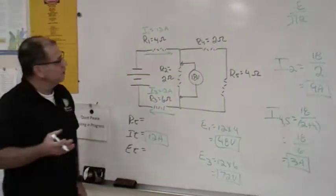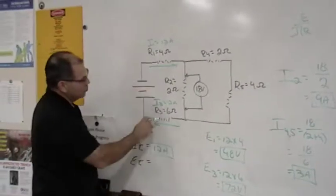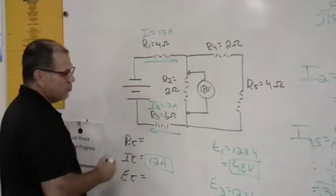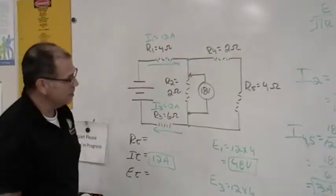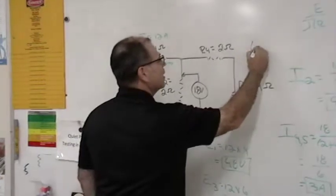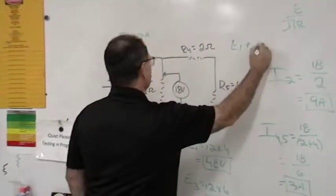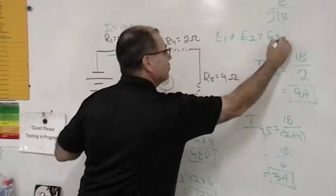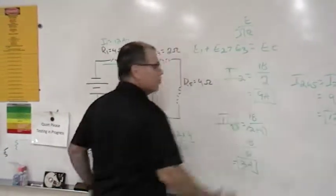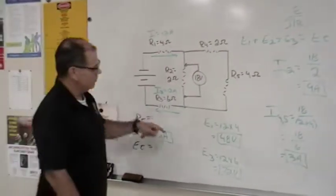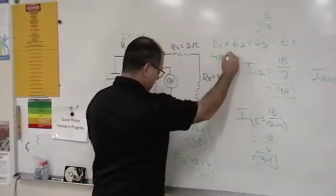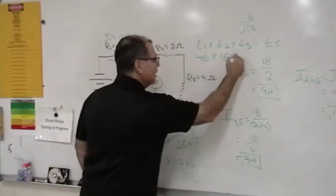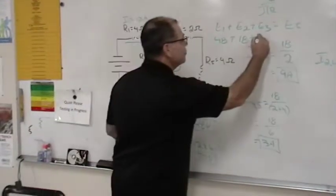Alright, well, since we know the relationship between these two resistors and the rest of the circuit, it's a series circuit, my total voltage is just the sum of the voltage drops. So if I say E1 plus E2 plus E3, that's going to give me my total voltage. E1 was 48. E2 was given to us already, 18 volts. And then E3, 72 volts.